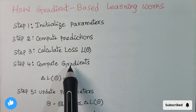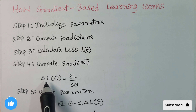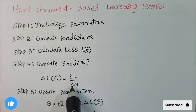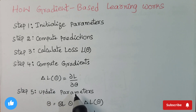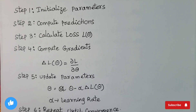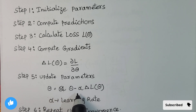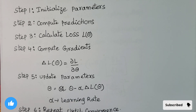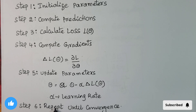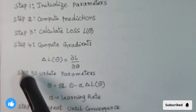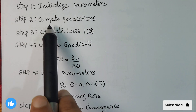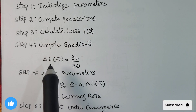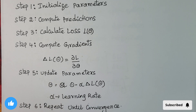In step four, we compute the gradients using the formula: ∇L(θ) = dL/dθ. In step five, we update the parameters using: θ_new = θ_old − α·∇L(θ), where α is the learning rate. In step six, we repeat until convergence. So to summarize, the six steps are: initialize parameters, compute predictions, calculate loss, compute gradients, update parameters, and repeat until convergence.